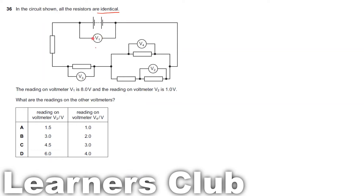V1 reads 8.0V which is the EMF of the battery. The reading on voltmeter V2 is 1.0V. The question asks for the readings on the other voltmeters, V3 and V4.